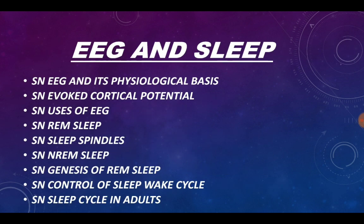Moving on to the chapter on EEG and sleep. Generally questions are not asked from EEG; however most questions from this chapter come on sleep. Short note on EEG and its physiological basis, evoked cortical potential, and usage of EEG are not important. Short note on REM sleep, sleep spindles, NREM sleep, genesis of REM sleep, control of sleep-wake cycle, and sleep cycle in adults — all these questions on sleep are generally asked.